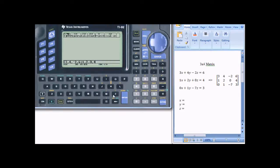And another semicolon to separate the rows. In the 3rd row. 0, 1, 0, 1, negative 7, 3. And close the bracket.